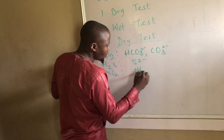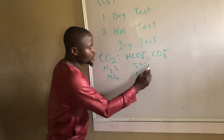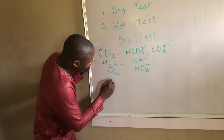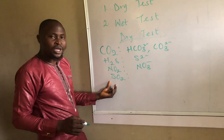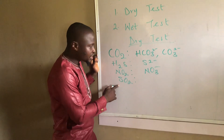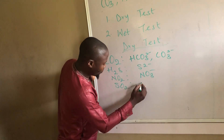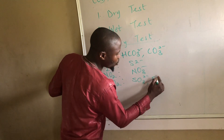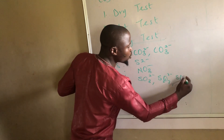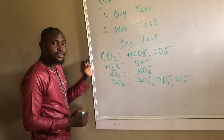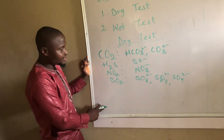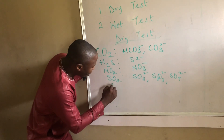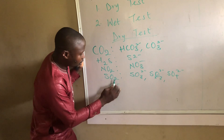Number four: if sulfur dioxide (SO₂) gas is evolving, then you have either sulfite ion (SO₃²⁻), thiosulfate ion (S₂O₃²⁻), or sulfate ion (SO₄²⁻). There are eight of these in total. Number five: if chlorine gas is evolving, then the chloride ion (Cl⁻) is present.